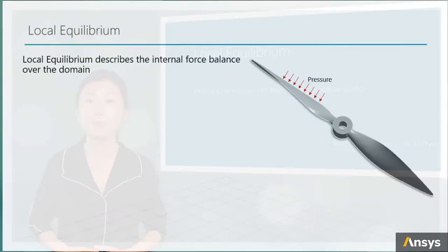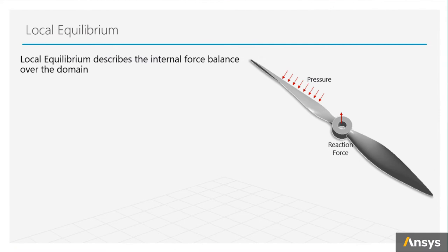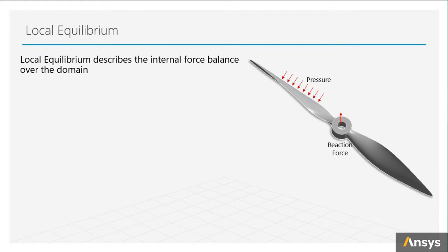Let's revisit the drum blade problem. We have a pressure on the blade and fixed boundary conditions at the center. We know that the reaction force from the fixed boundary condition will balance out the external load. This is called global force balance.